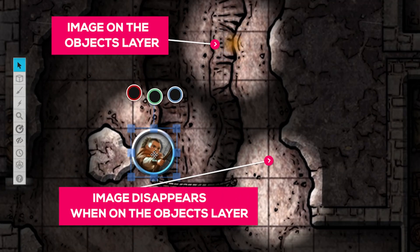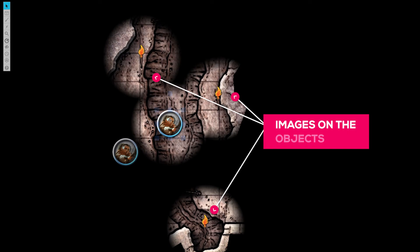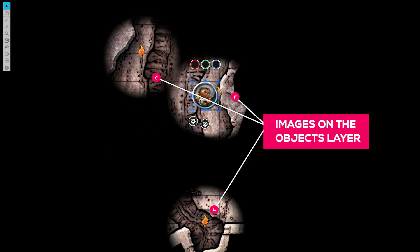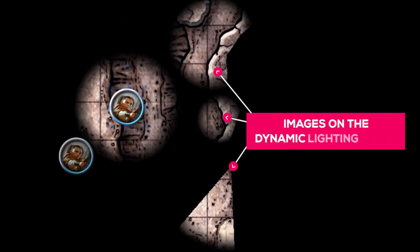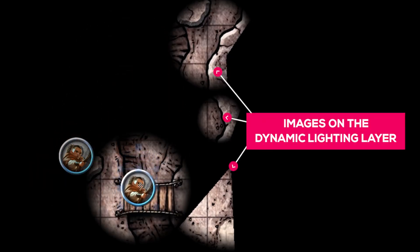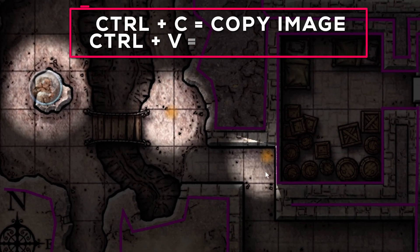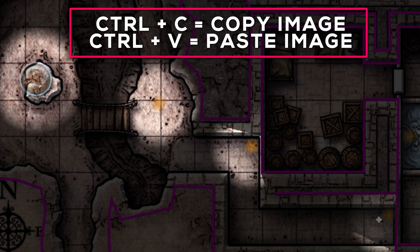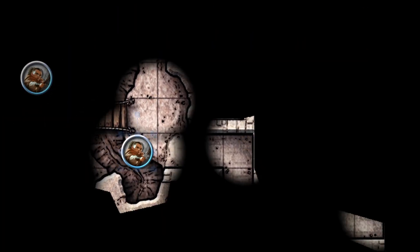The best way to remember this is that you can interact with objects and tokens on the objects and tokens layer, but you can only see light and shadow on the dynamic lighting layer. So if you're planning on putting torches in hallways that you want your group to interact with, make sure to put those on the objects and tokens layer. Everything else works the same — bright light, low light, directional light — your players just can't see the image you're using. Once we set up one light source, we can just copy and paste it in the areas we want, which makes setup faster and gets us into our game quicker.